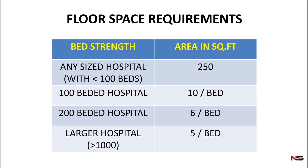If a hospital has 200 beds or more — up to 1000 beds — that hospital should have a floor space of 6 square feet per bed. So for a 200-bedded hospital: 6 × 200 = 1200 square feet of floor space.